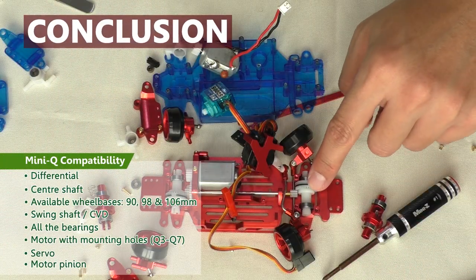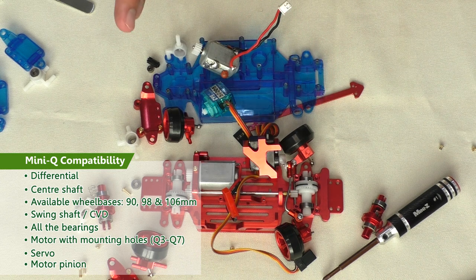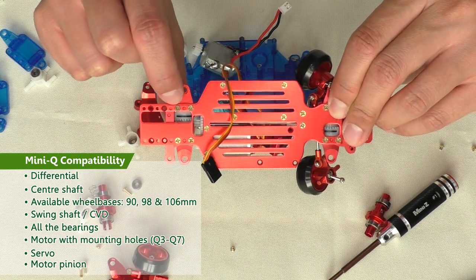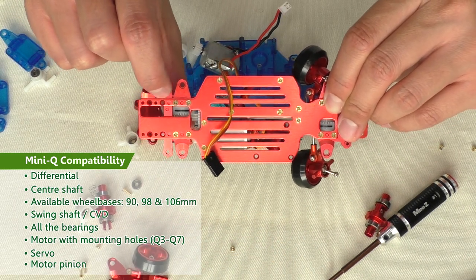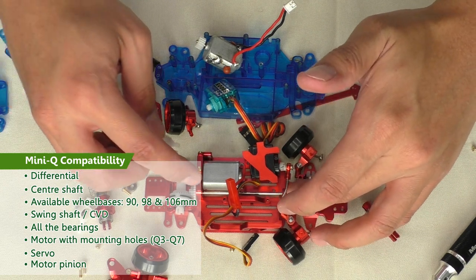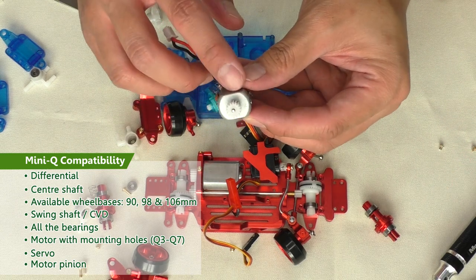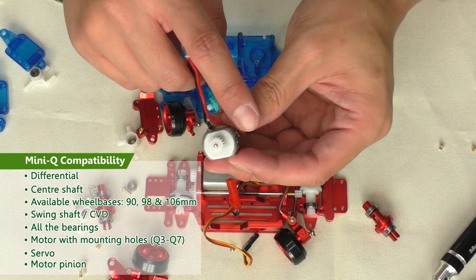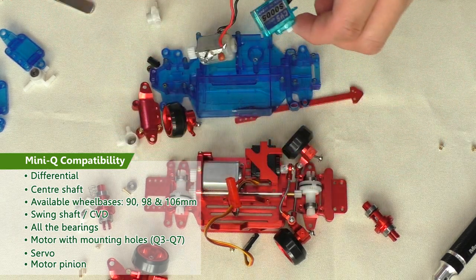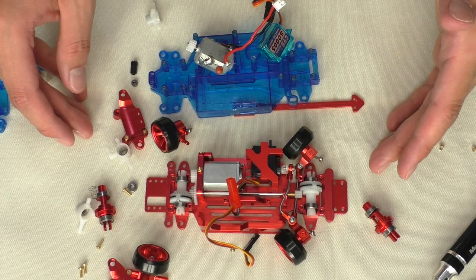In conclusion, the differential fits, the drive shaft fits, but you cannot use 94 millimeter wheelbase, you can only use 90 and 98. You cannot use 94 or 102 millimeter wheelbase because the chassis doesn't accommodate the increment of four millimeter. All the bearings are the same, so the bearings from the wheel hub, the bearings from the differential, the bearings from the center shaft are all the same. The motor doesn't fit because this one doesn't have the mounting holes at the front. If you can find one that has mounting holes at the front it is going to fit. The gear fits, the servo fits, and that's pretty much it. I hope this video is useful. Thanks so much for watching and see you again next time.